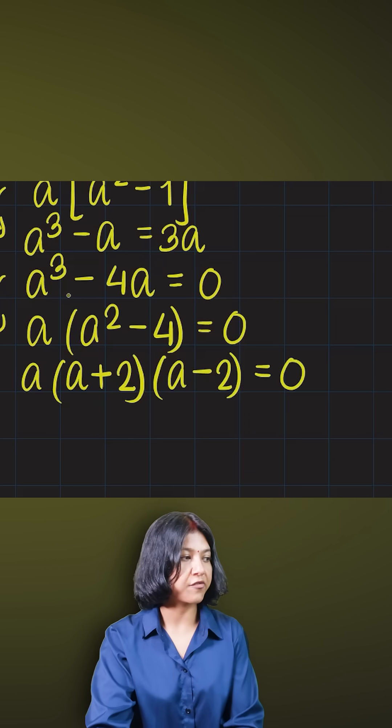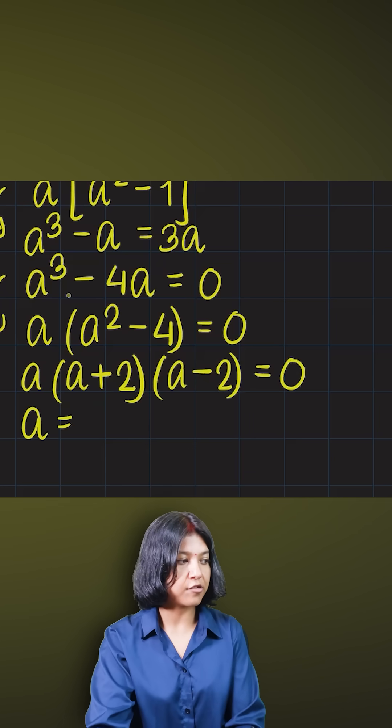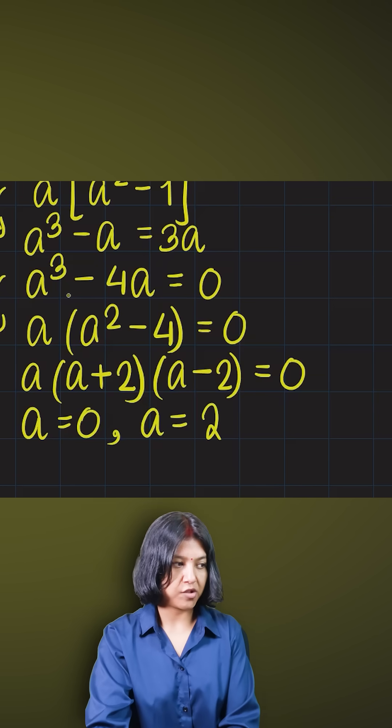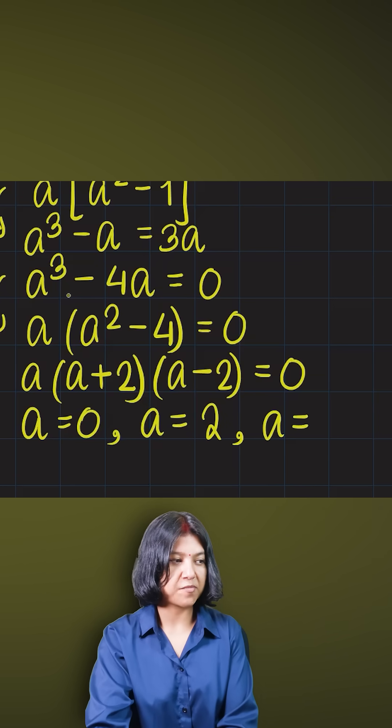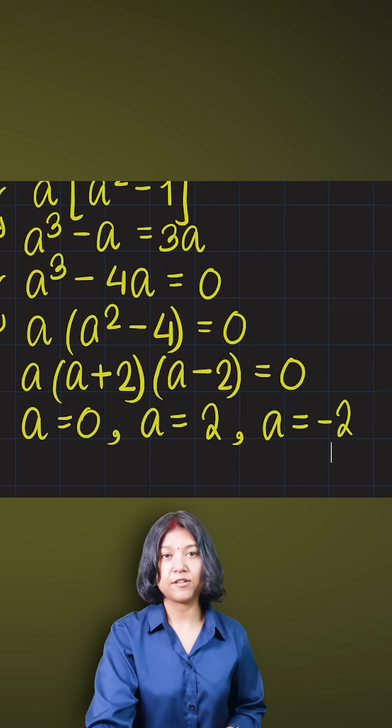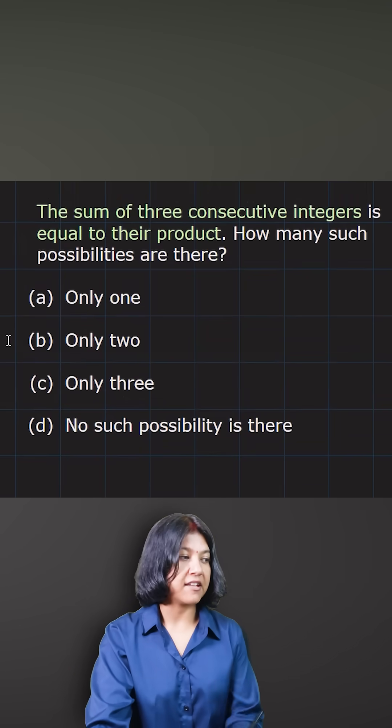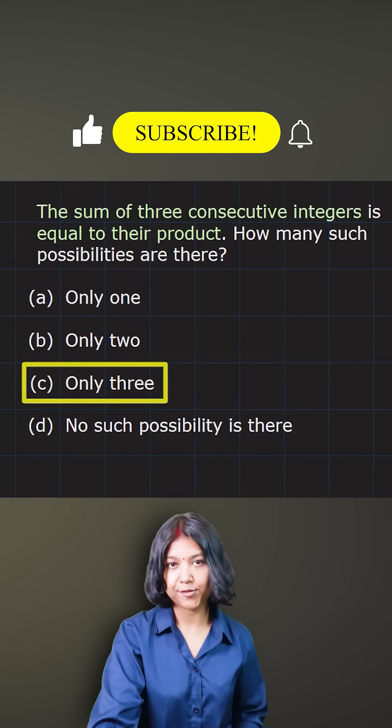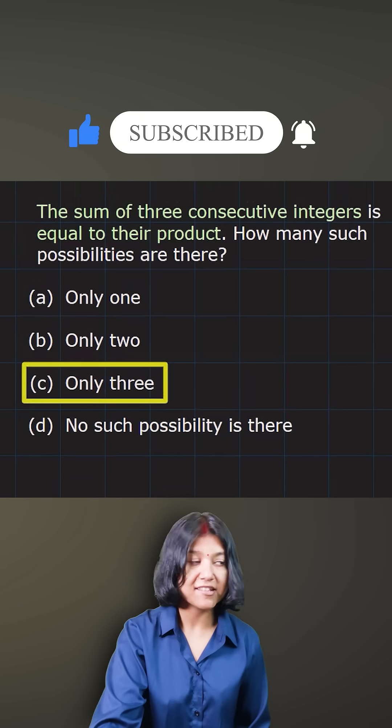It gives me three possible values for a. a can be either zero, the value outside, or it can be equal to plus two or minus two. So you have three options for a, not more than that. Thereby we can be assured that there can be exactly three possibilities and not more than that. That is how you approach questions like this, and that's it.